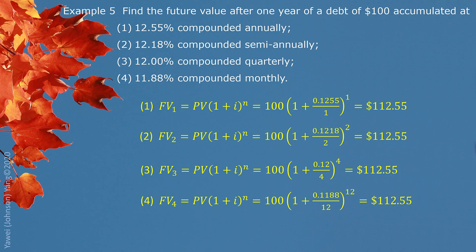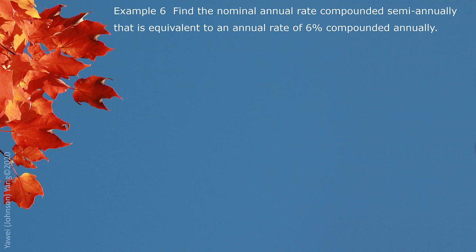These four different interest rates, compounding in different ways, all produce the same future value. That's the case where we clearly see that all four are equivalent interest rates.